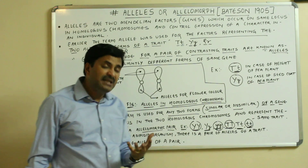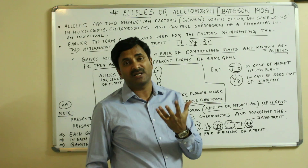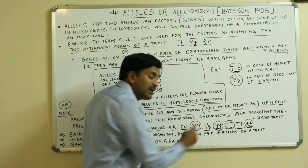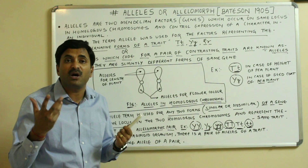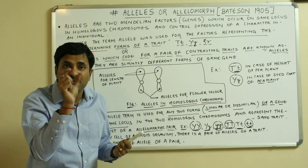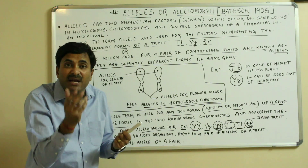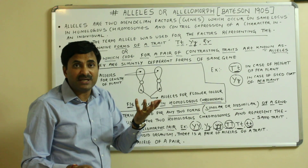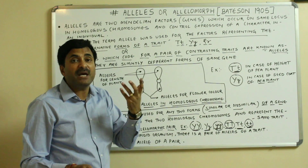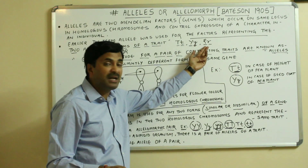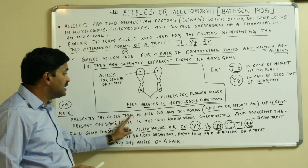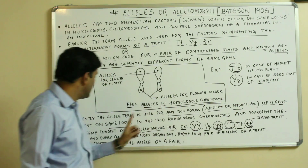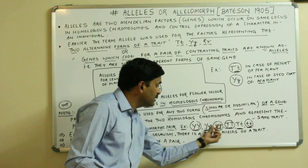When we represent a homozygous condition, a homozygous condition is one in which there is a pair of similar alleles present — so that is a pair of similar alleles. In a heterozygous condition, there is a pair of dissimilar alleles. Altogether, the allele term is used for any two forms of a gene; they may be similar or dissimilar.